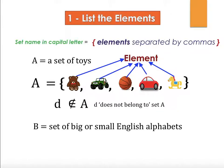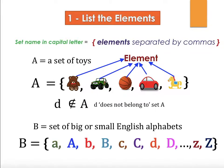We talked about distinct elements, but here set B is defined as big and small English alphabets. So when we write the set we have small a and big A, small b, big B and so on. We may say A and a are not distinct — there is repetition — but based on the set definition, we said we can have big or small English letters. So the set is allowing duplicates in this case, and it is still valid. If the set doesn't specify such things, then we need distinct objects.